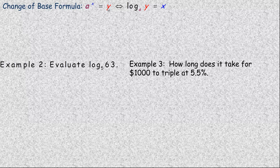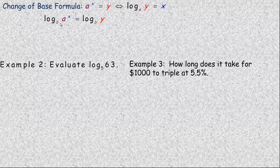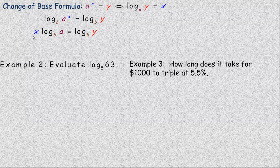In exponential form, a to the power of x equals y; the equivalent logarithmic expression is the logarithm of y base a equals x. The base of the log and the base of the power are the same, so a raised to the power of x equals y. What we're going to do is take a to the x equals y, and take the logarithm base b of both sides. The power law says that x can come down in front, giving x times the logarithm of a base b. To solve for x, divide both sides by the logarithm of a base b.